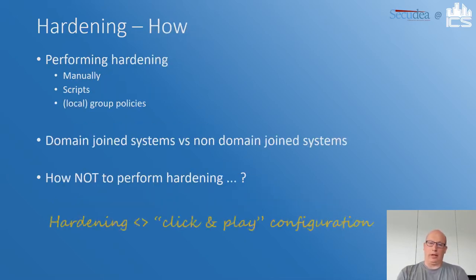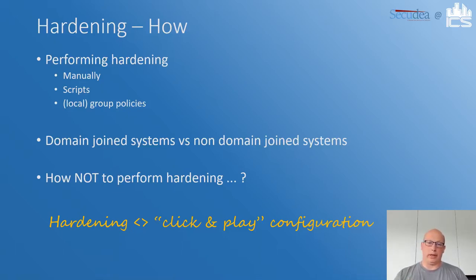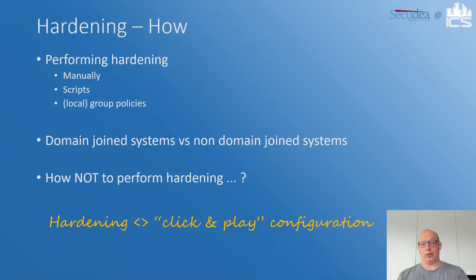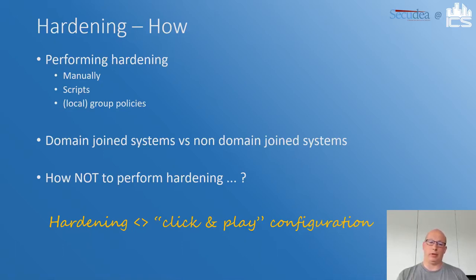How would you do hardening? Performing hardening can be done in three main ways. First, manually — applying every single setting by hand: changing registry keys, removing software, applying other settings. Or you can create scripts to assist you. Or you can use group policies, either local group policies or central group policies if you have, for example, an Active Directory. That's the main difference between domain-joined and non-domain-joined systems, but in both cases you can use group policies either locally or centrally.